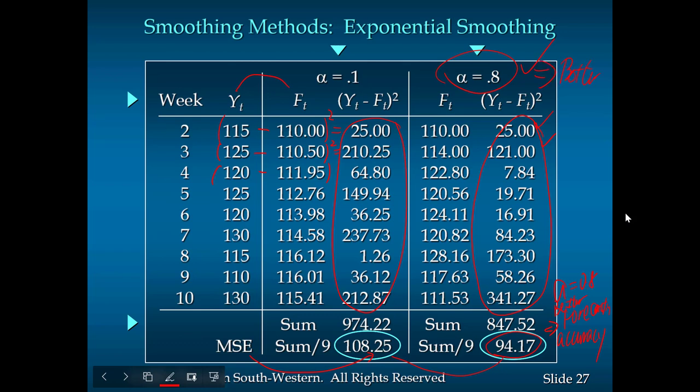In a real-life scenario, you obviously have to compare — maybe do multiple calculations to see which is best. You can keep changing α from 0.1 all the way to 0.9 and see whichever value gives us the best forecasting accuracy, then stick with that.